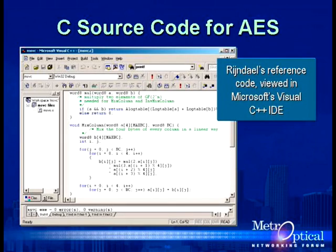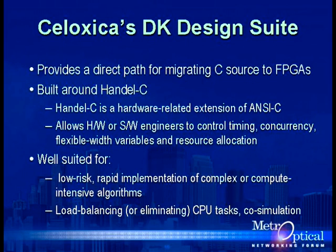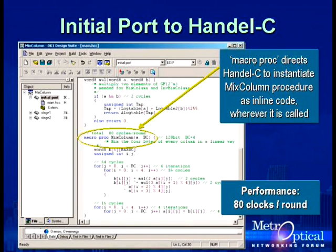Here is the original reference code for AES as provided in C — we're looking at the mixed column procedure in Microsoft's Visual C++ IDE. Suppose the product you're designing has to comply with a federal specification. The AES source code is readily available in C, but you need to encrypt data fast, so the best place to run this algorithm is in a high-speed FPGA, not a processor. That's where Soloxica comes in. Soloxica's tool is based on a language called Handle C — a hardware-related extension of C that directly generates EDIF — used to close the gap between rapid software development in C and high-speed implementation on an FPGA. We'll take another look at the reference code in the Soloxica IDE, which looks a lot like the Microsoft IDE.